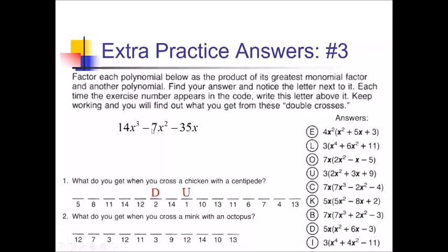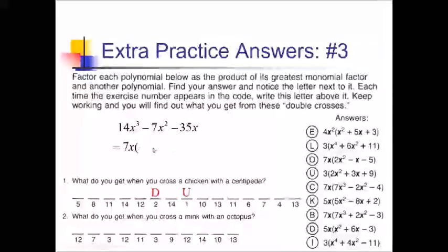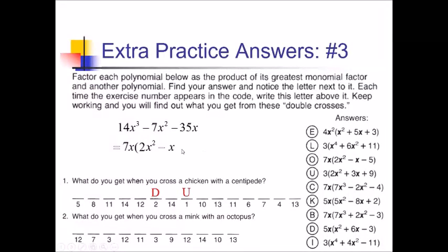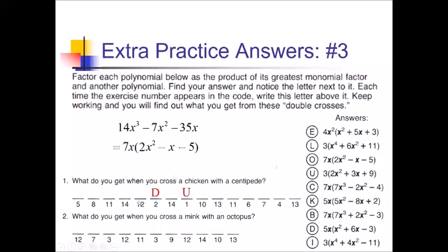On number 3, I've got 14, 7, and 35 — all multiples of 7, so I take a 7 out. They also all have at least x to the first, so I take an x out too, giving GCF 7x. Dividing by 7x: 14x cubed gives 2x squared; negative 7x squared gives negative x; negative 35x gives minus 5. That's 7x times (2x squared minus x minus 5), which is choice O. That puts an O in spot 3 — and there are actually two spot 3s, so we get two for the price of one.